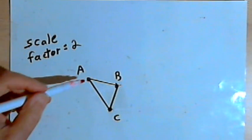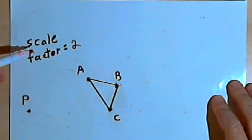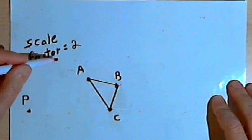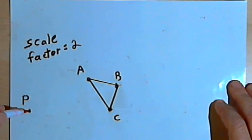We're going to start with the image of this triangle, triangle ABC. I'm going to dilate it by a scale factor of 2, and I'll use point P as the center of dilation.